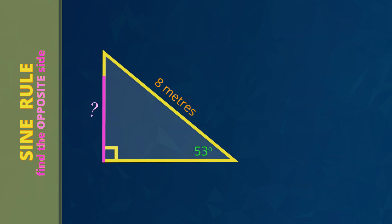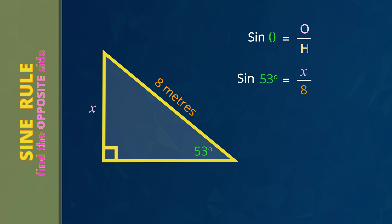Let's see another example to find the opposite side, marked with an X. In this example we'll also let the calculator do a bit more work to save time. The two things we already know are the angle of 53 degrees and the length of this hypotenuse of 8 meters. The first step is to write the rule: sine theta equals the opposite side divided by the hypotenuse. Substituting: angle theta is 53 degrees, the opposite side is X, and the hypotenuse is 8 meters. So sine 53 equals X divided by 8.